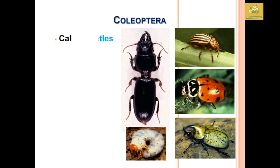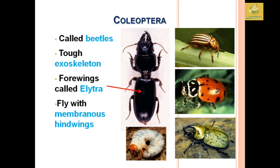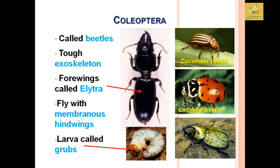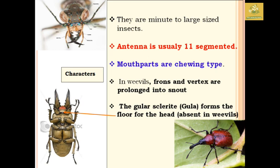Coleoptera insects are mainly called beetles and they have a tough exoskeleton compared to other animals. The forewing is called the elytron, which is the harder one, used as a cover and protection for their internal organs as well as the membranous hind wings. The larvae are called grubs. Some example beetles include the cucumber beetle, ladybird beetle, and rhinoceros beetle.